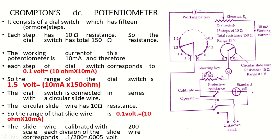This is the circuit of DC Crompton's potentiometer, which is very easy to understand. It consists of two dial switches — one large dial switch and one small dial switch. In the large dial switch there are 15 number of steps, and each step has a resistance of 10 ohm.